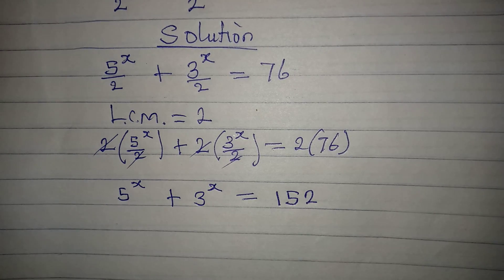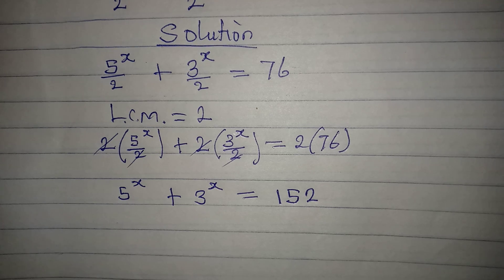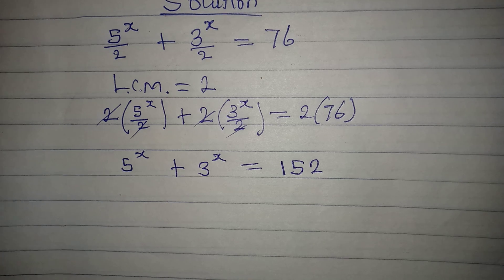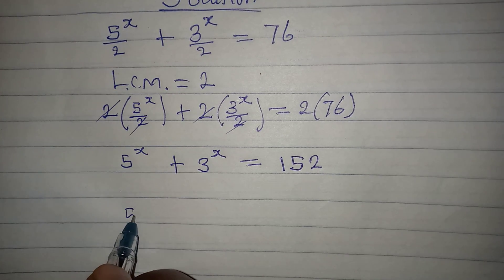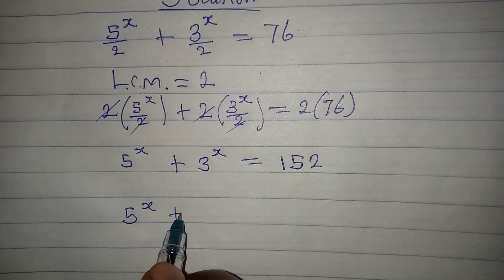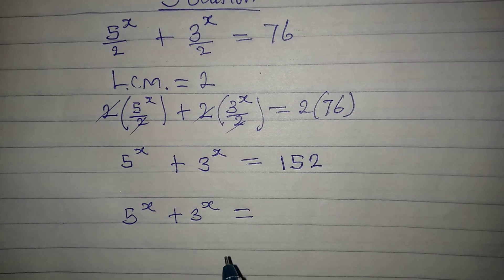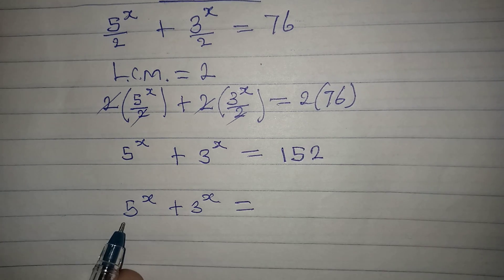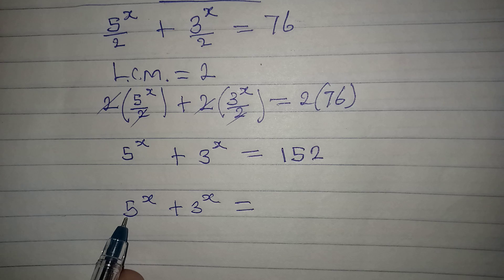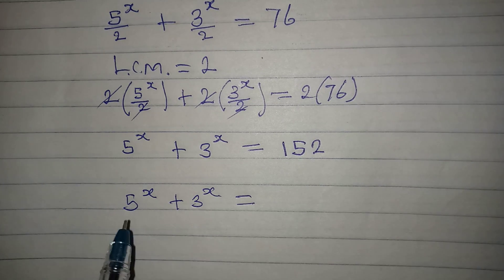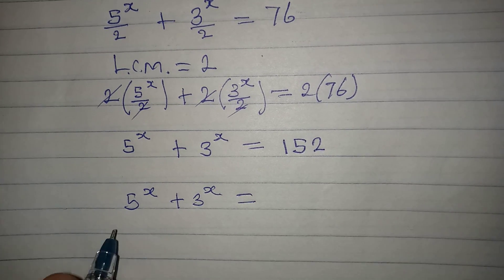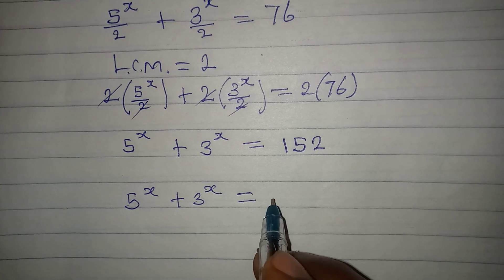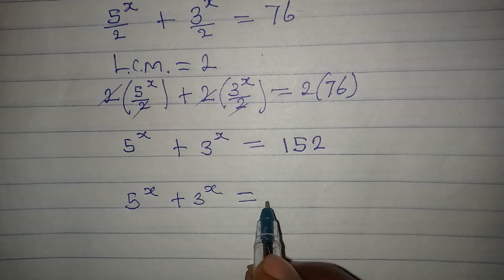Let's work on the right-hand side. We write 5 to the power of x plus 3 to the power of x equal to — now I want to find the highest power of 5 that fits into 152. I know that 5 squared gives me 25, and 5 to the power of 3 will give me...